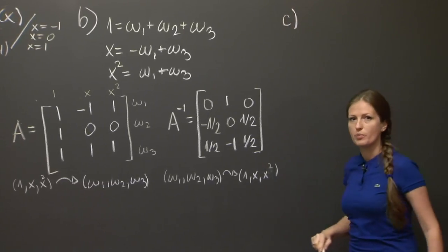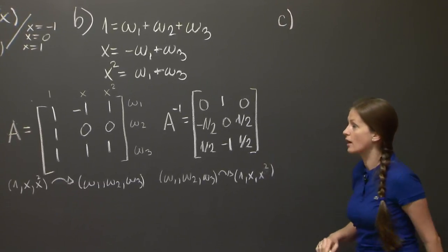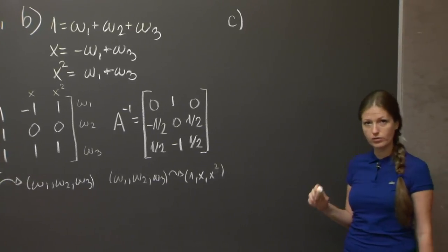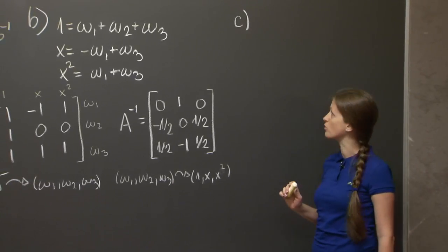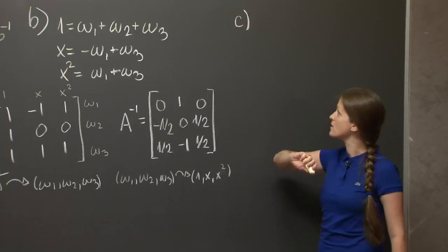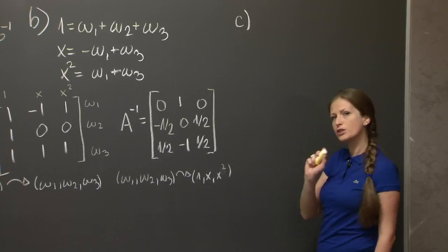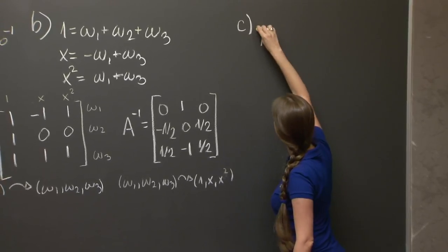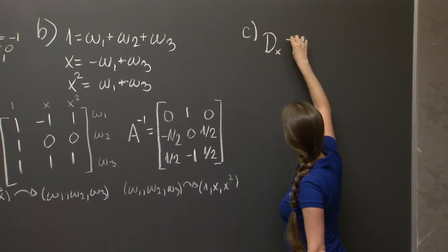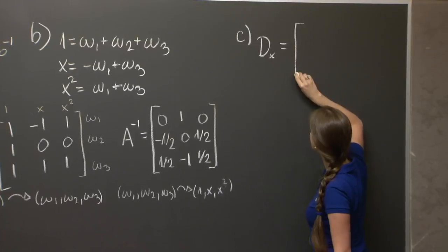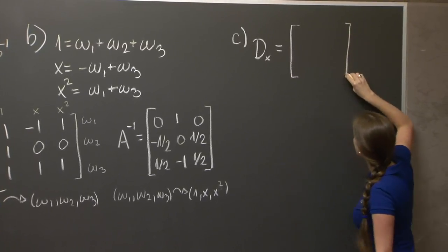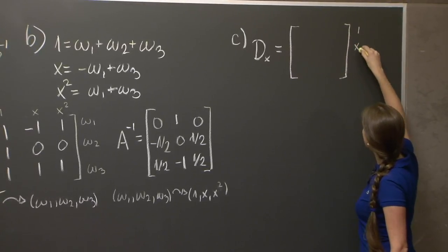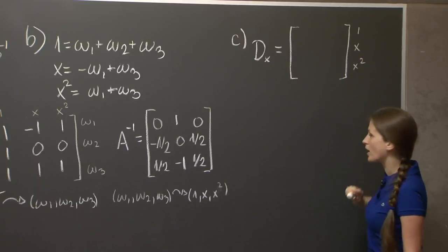Let's go on to the c part. The c part required us to find the matrix of taking derivatives, which is a linear map on the space of polynomials, in both of these bases. So let's first do the 1, x, x squared basis, because that one's easier.